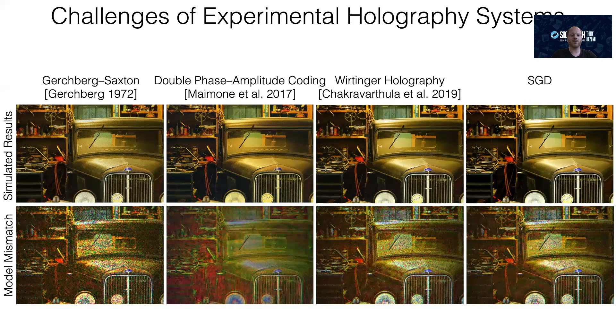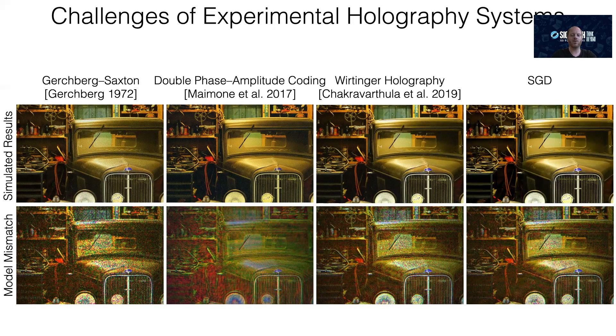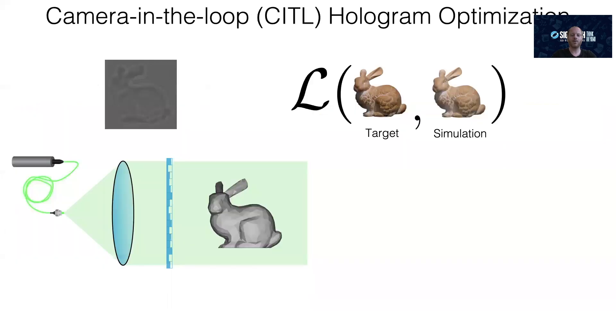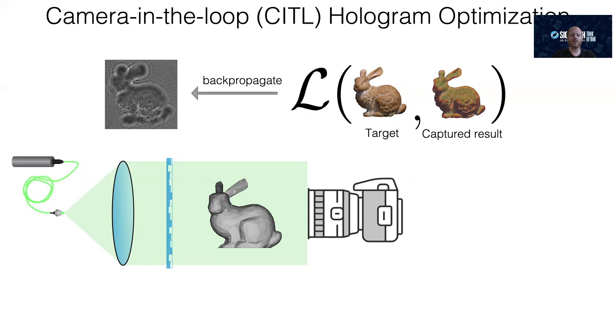This is not surprising because a mismatch of the simulated and physical light transport, even on the order of the wavelength of light, can lead to completely different interference patterns. What this means is that a better model of the physical light transport in the display will probably buy you a lot more than using more clever algorithms at this stage. But it's really hard to calibrate a holographic display at the required accuracy. We came up with a family of techniques that do exactly that in a fully automatic manner. We call this approach camera-in-the-loop holography. The idea is simple. Use a camera in the loop to capture the image of the physical display, compare that with the target image, and backpropagate the error. This sounds easy, but it's not straightforward. I don't have enough time to go into the technical details, but you can look at our paper for more details.